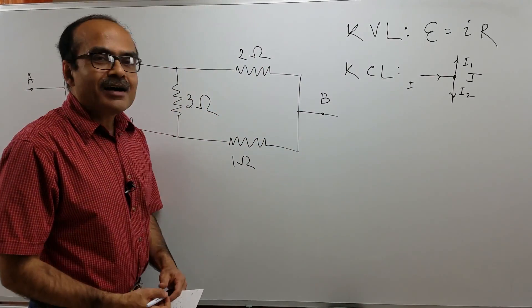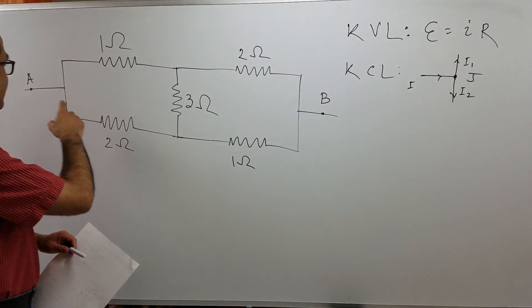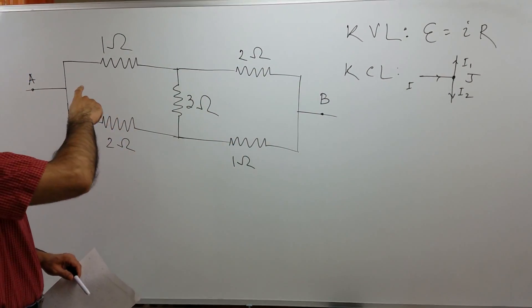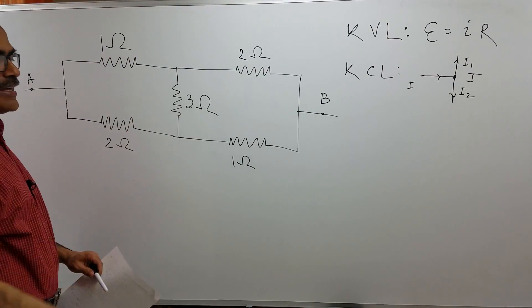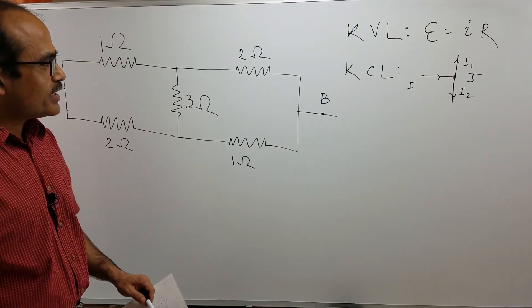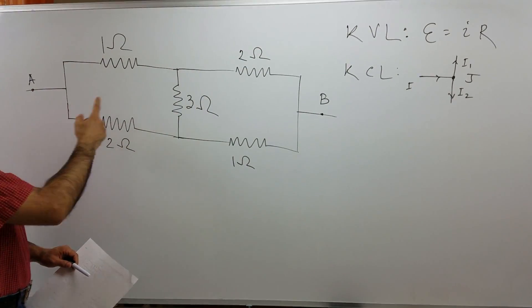In this session, I will derive the equivalent resistance between A and B. We can see that the resistors are neither in series nor in parallel. So we cannot use series or parallel formulas to find the equivalent resistance between A and B.